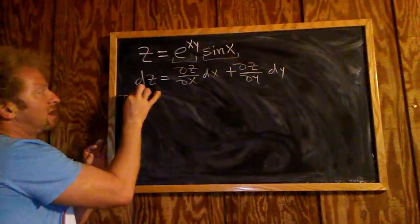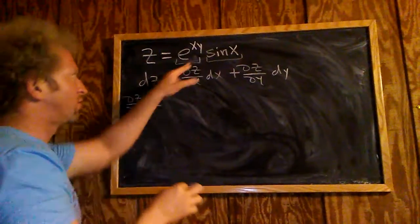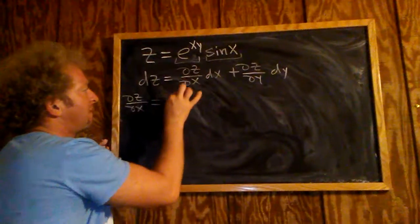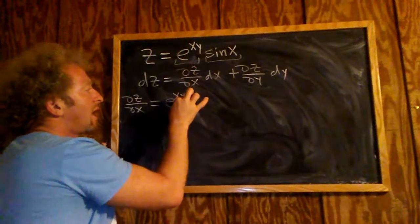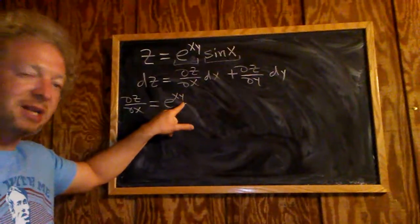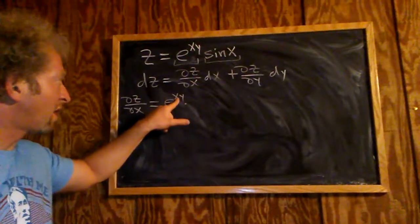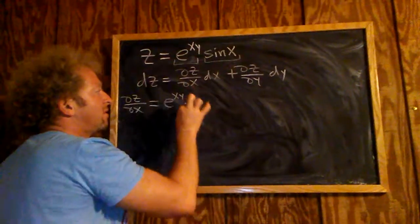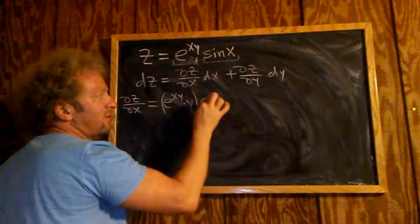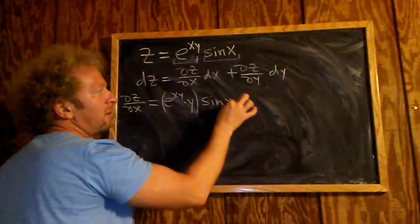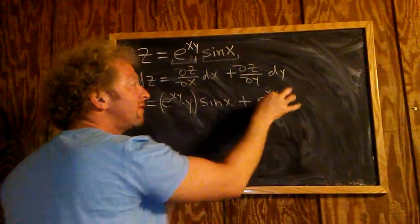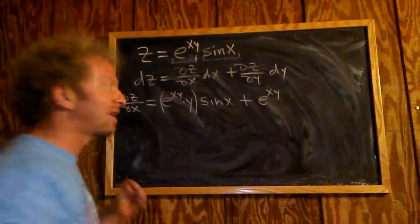So ∂z/∂x: the product rule says it's the derivative of the first piece times the second, plus the first times the derivative of the second. The derivative of e to the xy uses the chain rule — it's e to the xy times the derivative of the inside. The derivative of xy with respect to x is y, so we get e to the xy times y. Then plus e to the xy times cosine x, since the derivative of sine is cosine.